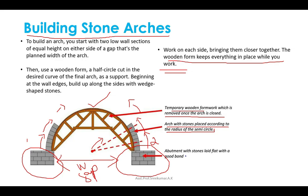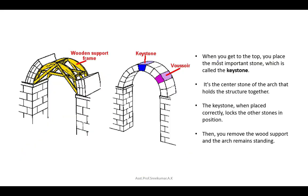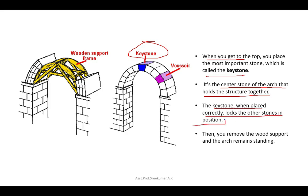When you get to the top, you place the most important stone — the keystone — which is the center stone of the arch that holds the structure together. When placed correctly, the keystone locks all other stones in position. After constructing the arch shape, you remove the wooden support and the arch remains standing.